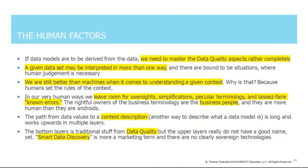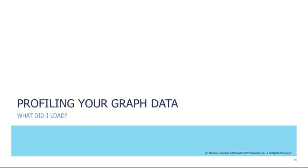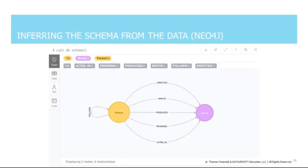There are definitely some human aspects of data modeling. Even if we can get data in, we need to make some human adjustments. You can do a lot of profiling very easily — for instance, what is the schema that we have loaded? You can infer that from the data. This is a Neo4j example showing the movies schema with persons, movies, and some relationships between them. That's what the schema looks like — now I understand better.